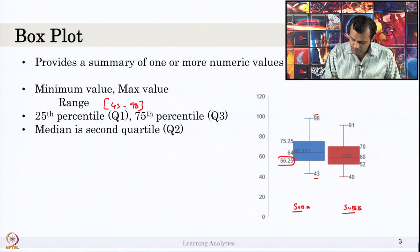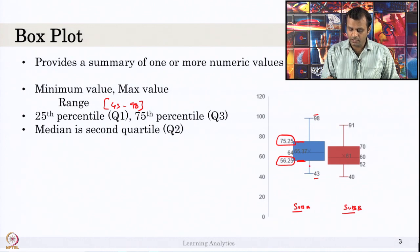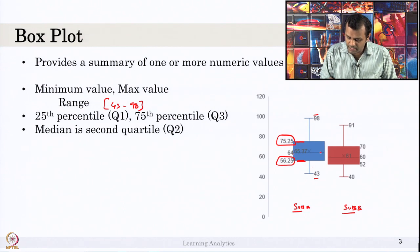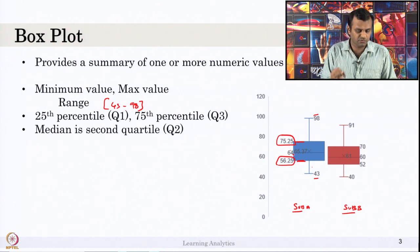The 25th percentile is the lower edge of the box and the upper edge of this rectangle is the 75th percentile. The percentile indicates there are 25 percent of values in this performance below this particular value. That is, we have 60 students — 15 students who have got marks less than 56.25 and there are 15 students who have got marks more than 75.25. This middle line indicates the median value; median is 64. Median is always the 50th percentile of the marks.